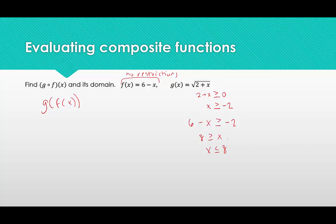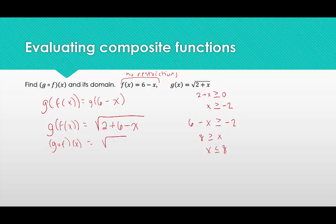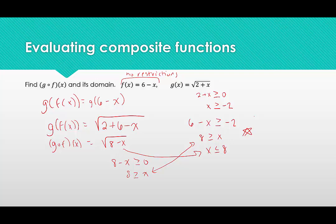So our domain restriction is x ≤ 8. We start with f(x) = 6 - x, and then g of (6 - x) replaces x in g with 6 - x, giving us the square root of (2 + (6 - x)), which simplifies to the square root of (8 - x). We can verify: 8 - x ≥ 0 means x ≤ 8, which matches. If this is confusing, you can always find the composite function first and then look for restrictions on it directly.